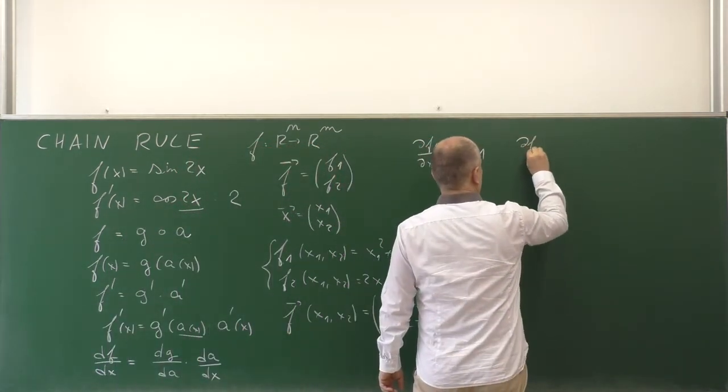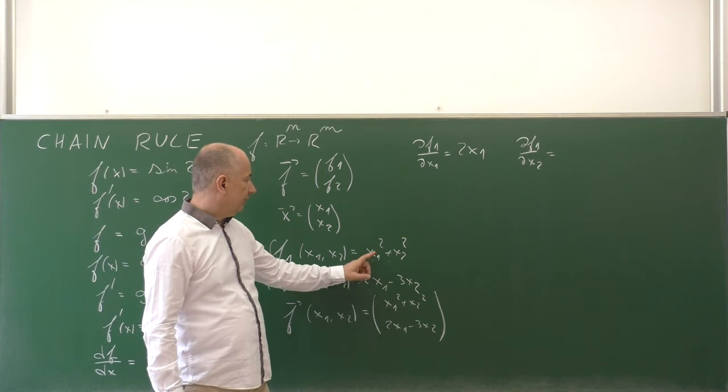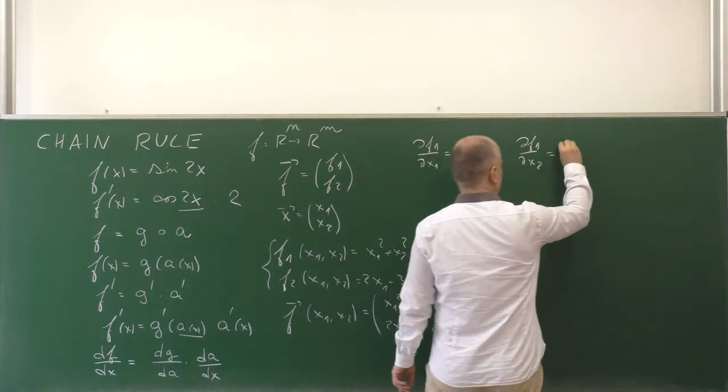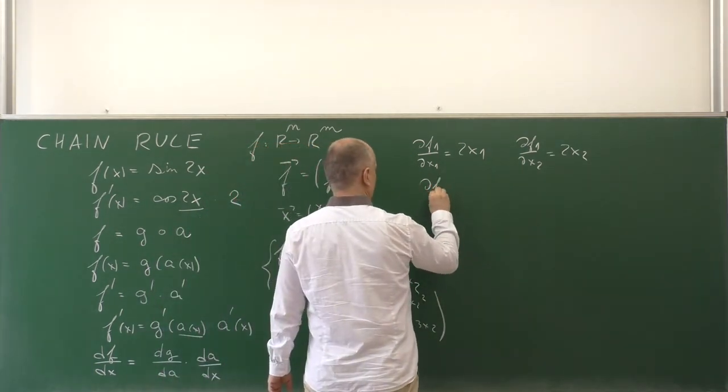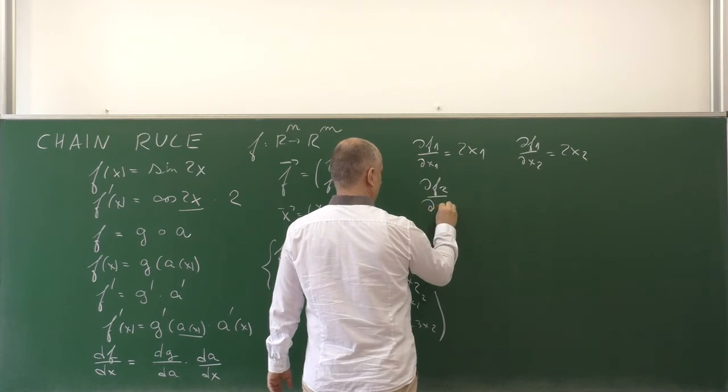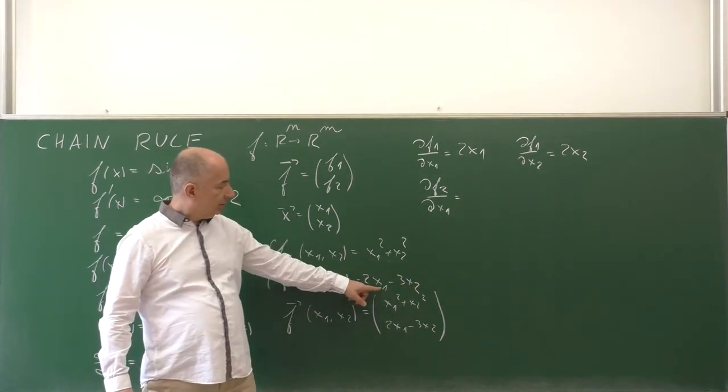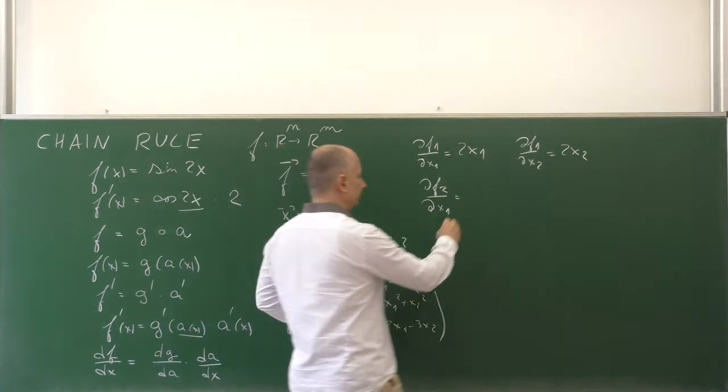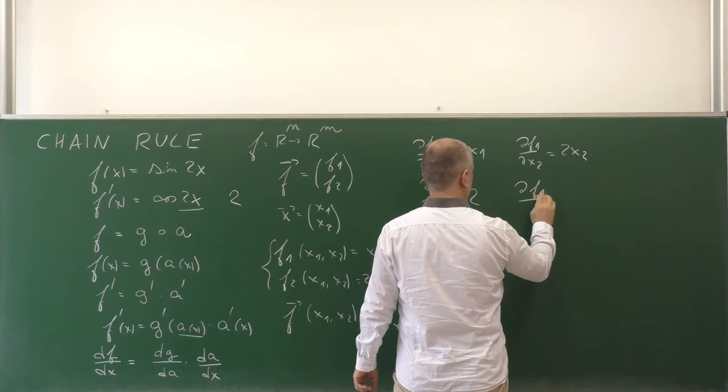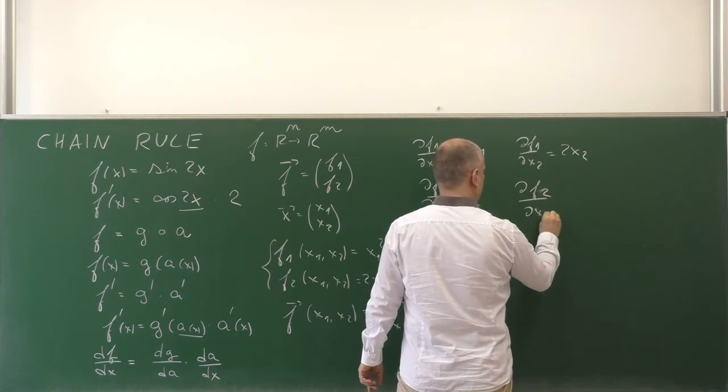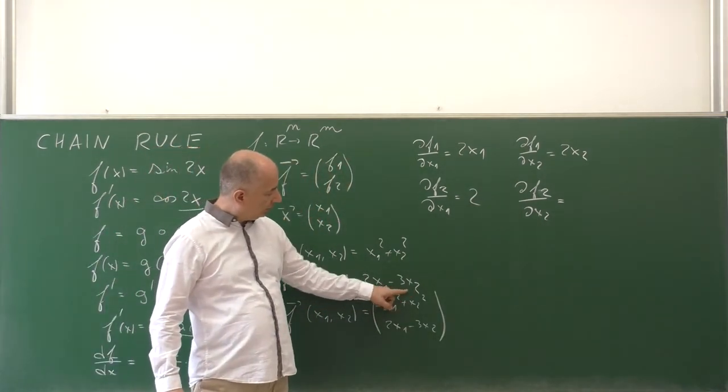Then we can differentiate once again the first function, but this time with respect to the second argument: 0 + 2x₂. And the same for the second component of the result, for the second function, ∂f₂/∂x₁. Here is the formula for f₂, and when we differentiate with respect to x₁, we get 2. And finally, we can have ∂f₂/∂x₂. Here is the formula for f₂, and the derivative with respect to x₂ is -3.